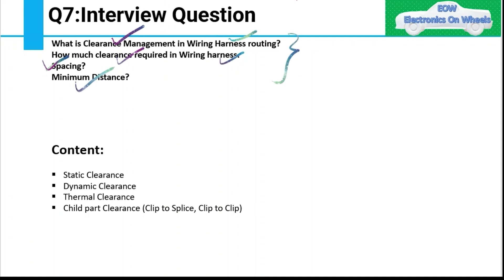If it is not related to a specific component, you can answer in a general way. We have different types of clearance: static clearance, dynamic clearance, thermal clearance, and child part clearance. In this video we will try to understand all these different types of clearance in wiring harness.